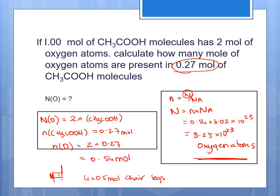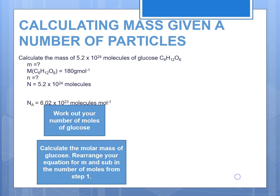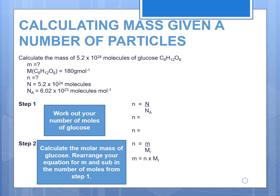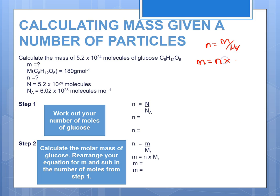There are plenty of questions in your textbook to practice. We've shown that we can calculate the number of moles from a mass, which means we can also rearrange to calculate mass. If n = m ÷ MR, rearranging gives m = n × MR. This makes sense: molar mass is the mass per mole, so multiplying by the number of moles gives you the total mass.